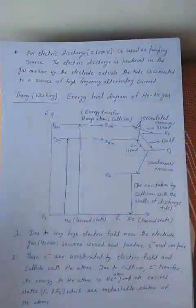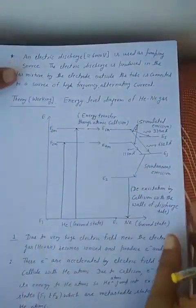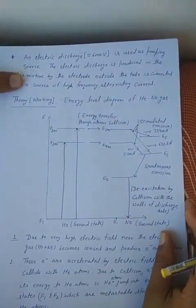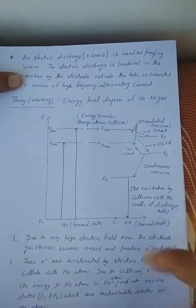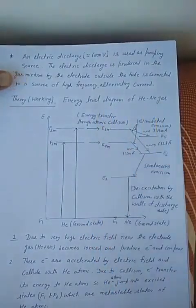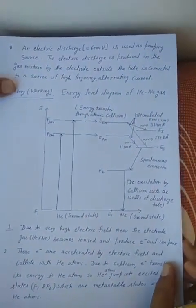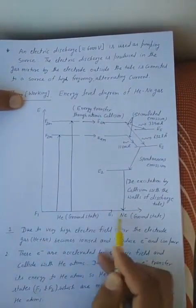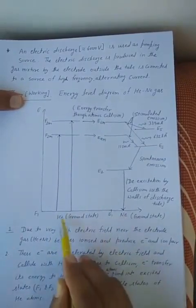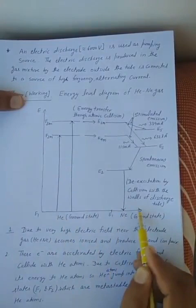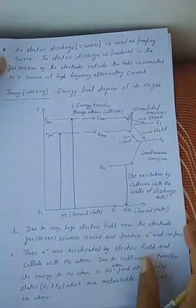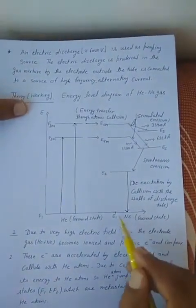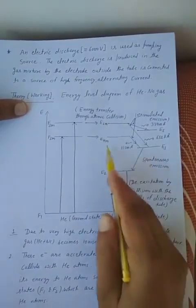The next part is the working. Light emission is a microscopic process — light is emitted by the de-excitation of atoms. We first discuss the energy level diagram of Helium and Neon gas, which is most important. The ground state of the Helium atom and the ground state of the Neon atom are shown. The energy levels of Helium are represented by F — F1, F2, F3 — and the energy levels of Neon are represented by E1, E2, E3 up to E6.